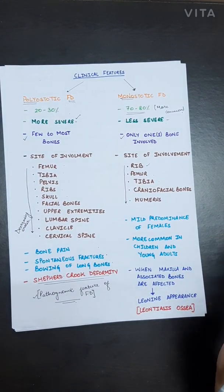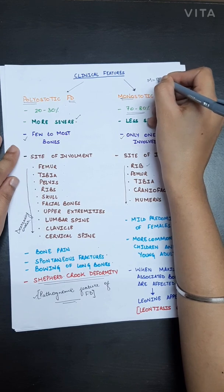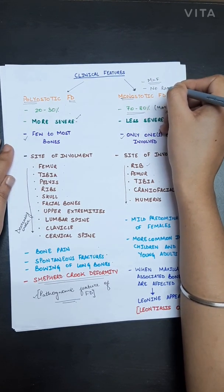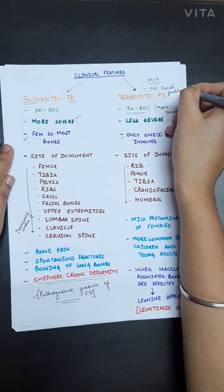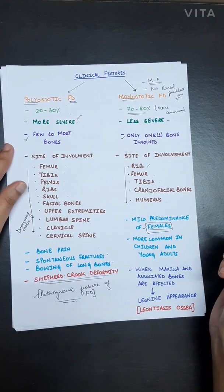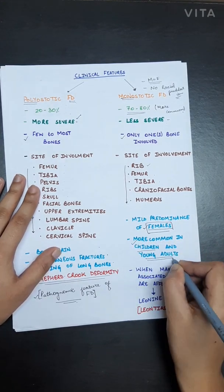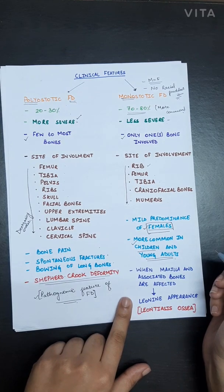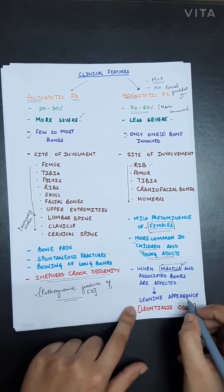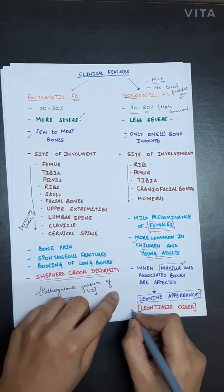In fibrous dysplasia, there is no gender or racial predilection — males and females have an equal chance of getting the disease. However, there is a mild predominance in females in monoostotic fibrous dysplasia. This form is more common in children and young adults. When monoostotic fibrous dysplasia involves the maxillary bone, it gives a leonine appearance, also known as leontiasis ossea.